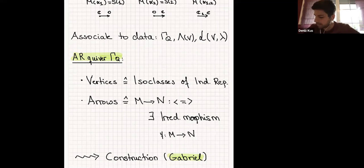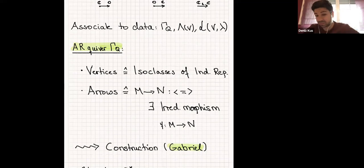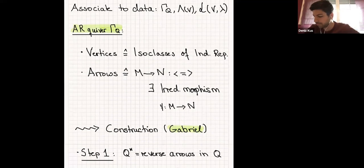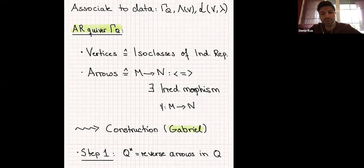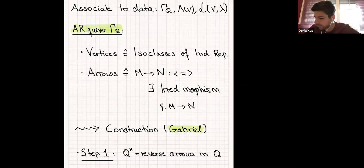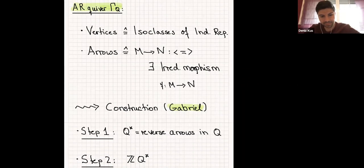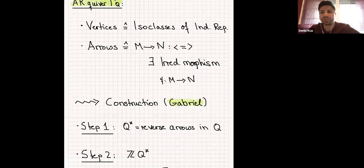In the first step, which is very easy, you just reverse all arrows in Q. If you have an arrow, just take the opposite arrow. In step two, you take an infinite quiver, which I want to denote by ZQ*.